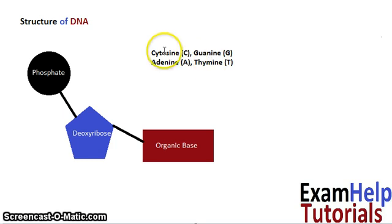This is because cytosine is a single ring base, so it only has one ring. Then guanine is a double ring base with two rings, adenine is a double ring base, and thymine is a single ring base.